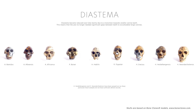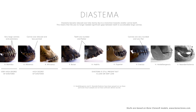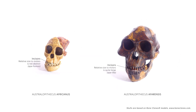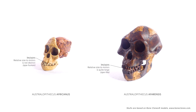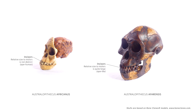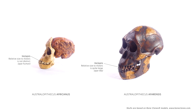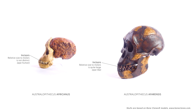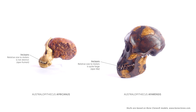Diastema became lost over time because as the canines became reduced, gaps between teeth were no longer needed to accommodate the enlarged lower canines. While africanus had smaller teeth than Afarensis, analysis of their dental remains found more scratches than pits, suggesting that africanus ate tough foods but also had a varied diet of softer fruit and plants.